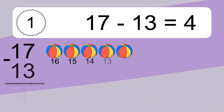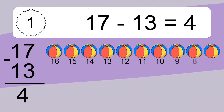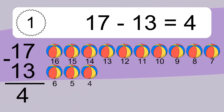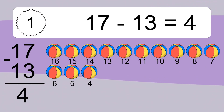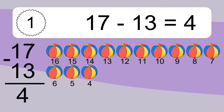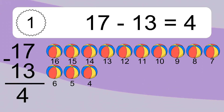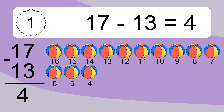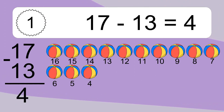17 minus 13 equals 4. Let's count it: 16, 15, 14, 13, 12, 11, 10, 9, 8, 7, 6, 5, 4.